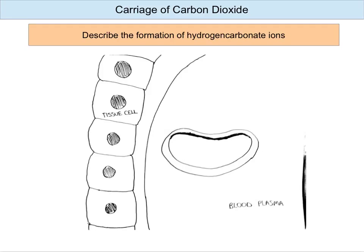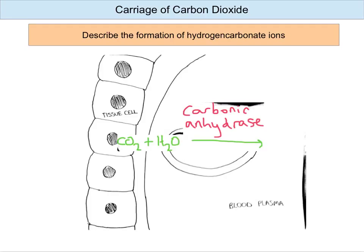The carbon dioxide diffuses into the red blood cell down a concentration gradient. The red blood cell contains an enzyme called carbonic anhydrase, and this enzyme catalyses the reaction of carbon dioxide plus water. This forms a compound called carbonic acid, which has the formula H₂CO₃. The A-level book may show a minus sign on this, but it doesn't actually have a minus sign — it is uncharged. There's a mistake in the book.